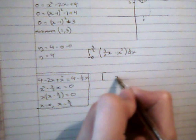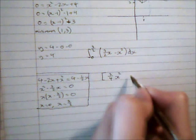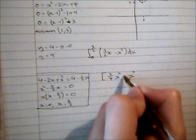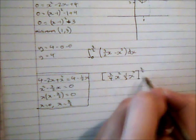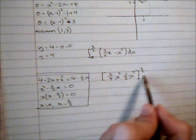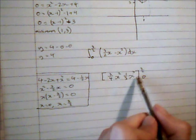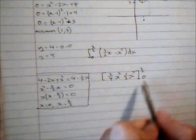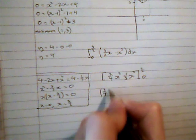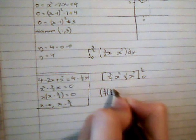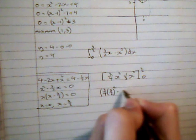So raise the power by 1, divide by the new power. Raise the power by 1, divide by the new power. With my limits 3 over 2 and 0. Now if I substitute 0 in here, this is just going to be 0. So I can actually just forget about that bit.